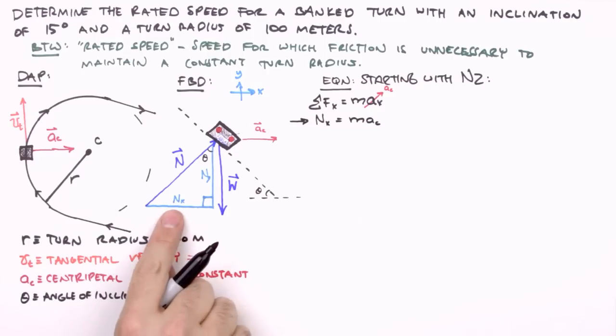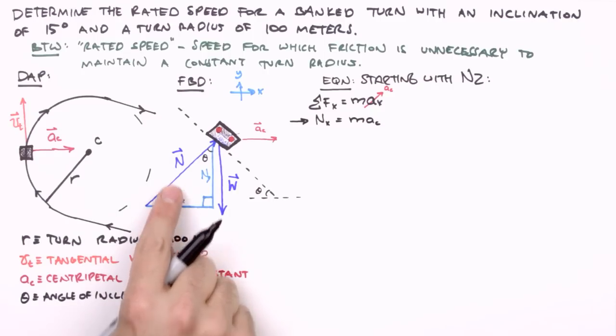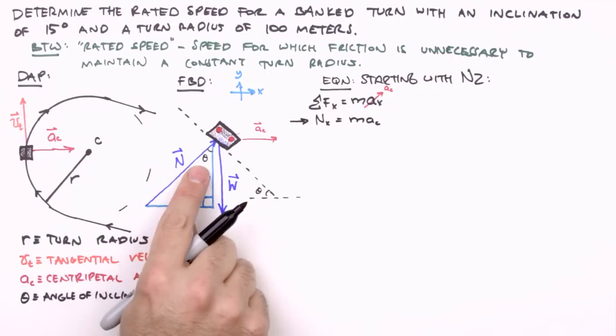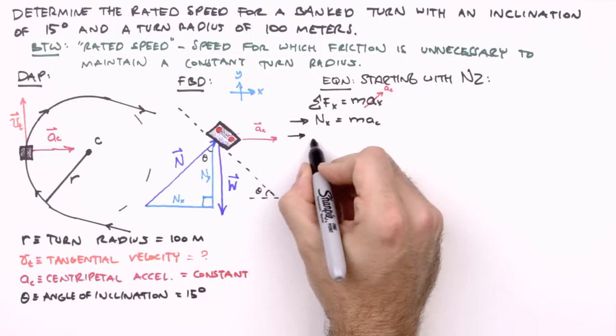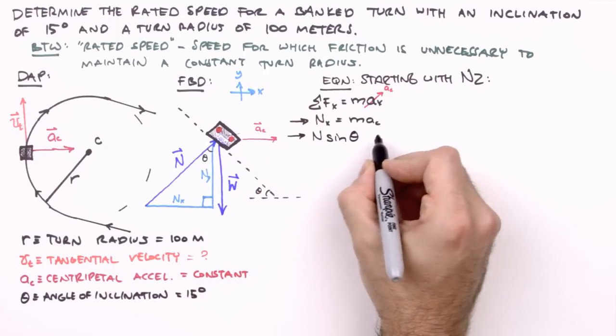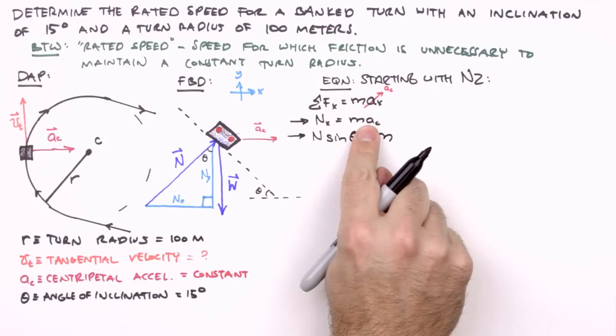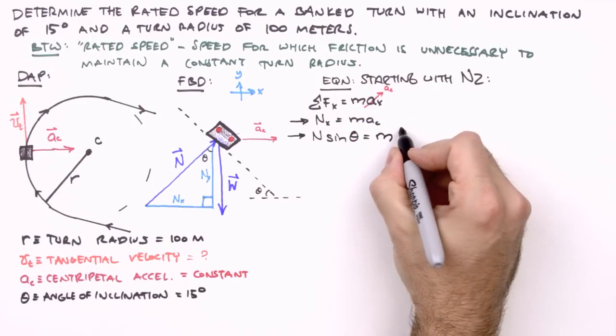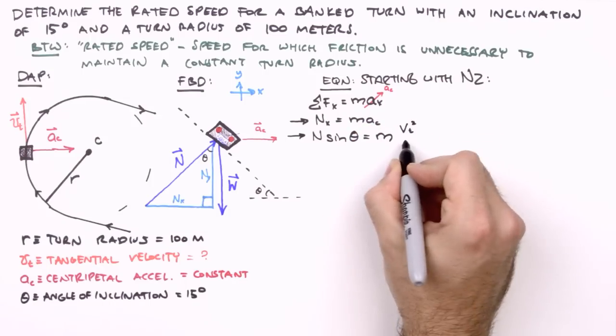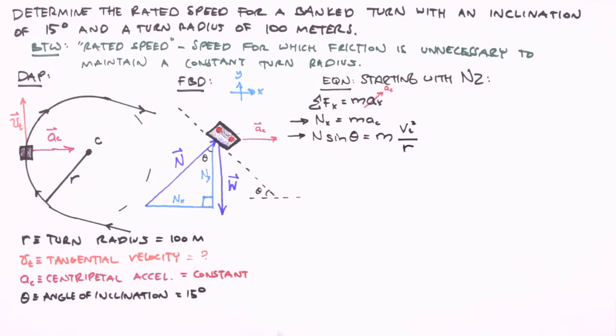Now, trigonometrically, n sub x is related to n by a factor of sin theta. So we can write n sin theta equals m times, and we'll write the mathematical definition of centripetal acceleration here, the square of the tangential velocity, v sub t, over the turn radius, r.